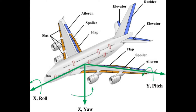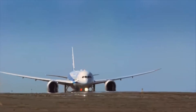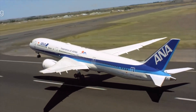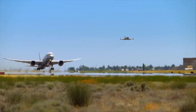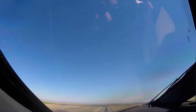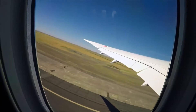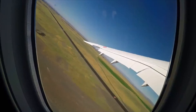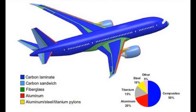The secondary controls are used for finer adjustments and give more control to the pilot. Modern commercial aircraft such as the Boeing 787 Dreamliner utilize composite materials for their high strength and low weight. The reduction in weight allows for higher fuel efficiency and better flight performance. The 787 Dreamliner features a carbon fiber fuselage and wing structure, allowing the aircraft to consist of 50% composite materials.